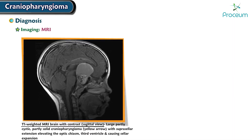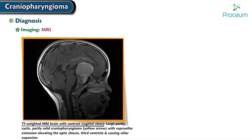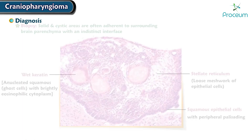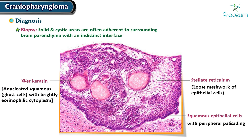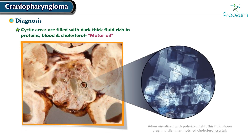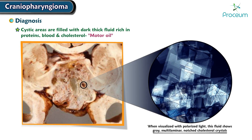For diagnosis, MRI shows calcified cysts in the suprasellar region. On biopsy, these tumors have solid and cystic areas and are often adherent to the surrounding brain parenchyma, with an indistinct interface. The cystic areas are filled with dark, thick fluid rich in proteins, blood, and cholesterol, with an appearance resembling motor oil.